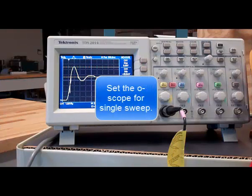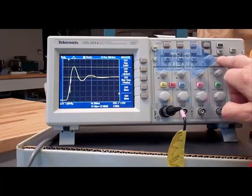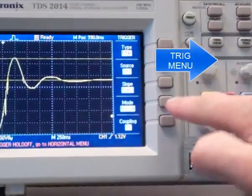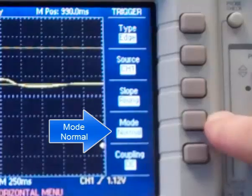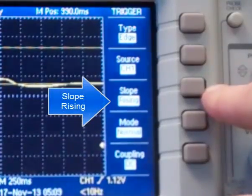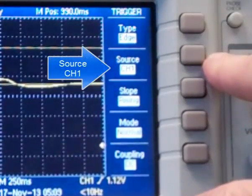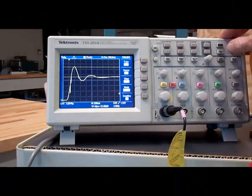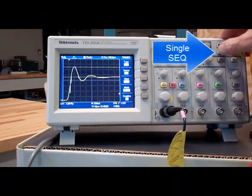Set the oscilloscope for single sweep, press trigger menu, mode normal, rising signal, channel 1, single sequence.